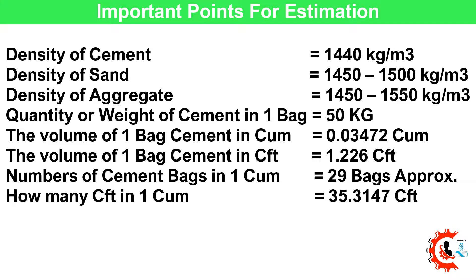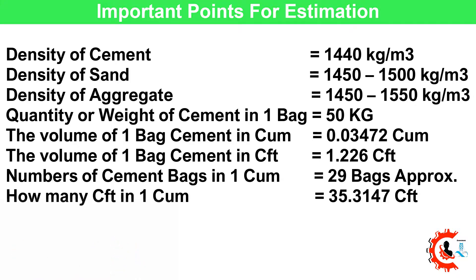Important Points for Estimation: Density of cement = 1,440 kg/m³. Density of sand = 1,450 to 1,500 kg/m³. Density of aggregate = 1,450 to 1,550 kg/m³. Weight of cement in one bag = 50 kg. Volume of one cement bag = 0.03472 m³ or 1.226 cubic feet. Number of cement bags in one cubic meter ≈ 29 bags. One cubic meter = 35.3147 cubic feet.